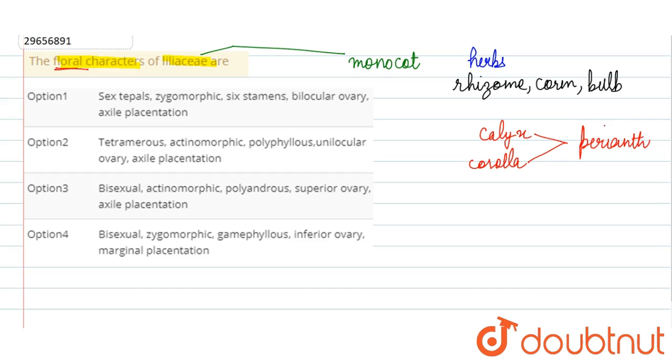If we look at floral characters of the Liliaceae family, let's examine these terms: bisexual. Bisexual means that in a flower, there are four whorls present: first the sepals (calyx), the petals (corolla), and the reproductive whorls - the male reproductive whorl (androecium) and the female reproductive whorl (gynoecium). When both male and female are present in a flower, we call it a bisexual flower. In the Liliaceae family, we find these bisexual flowers. This is correct.